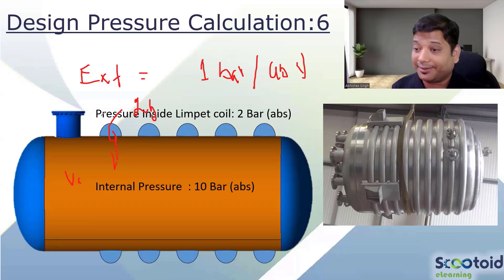If you have understood the external pressure calculation, length plays a very important role. See, this pressure in the coil, definitely it is acting as external, but it is acting at a very short length.